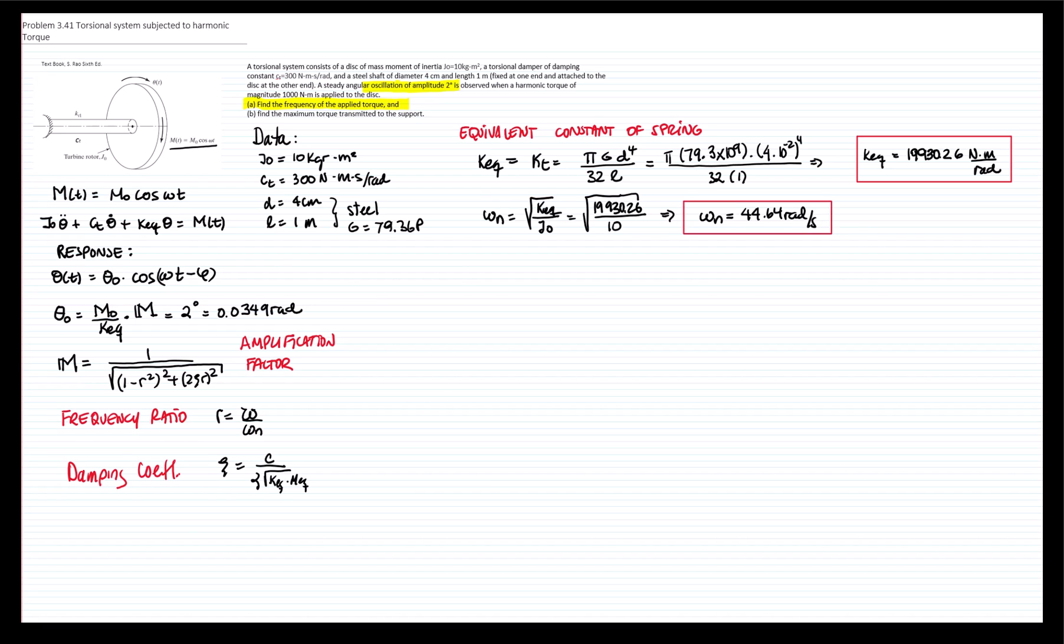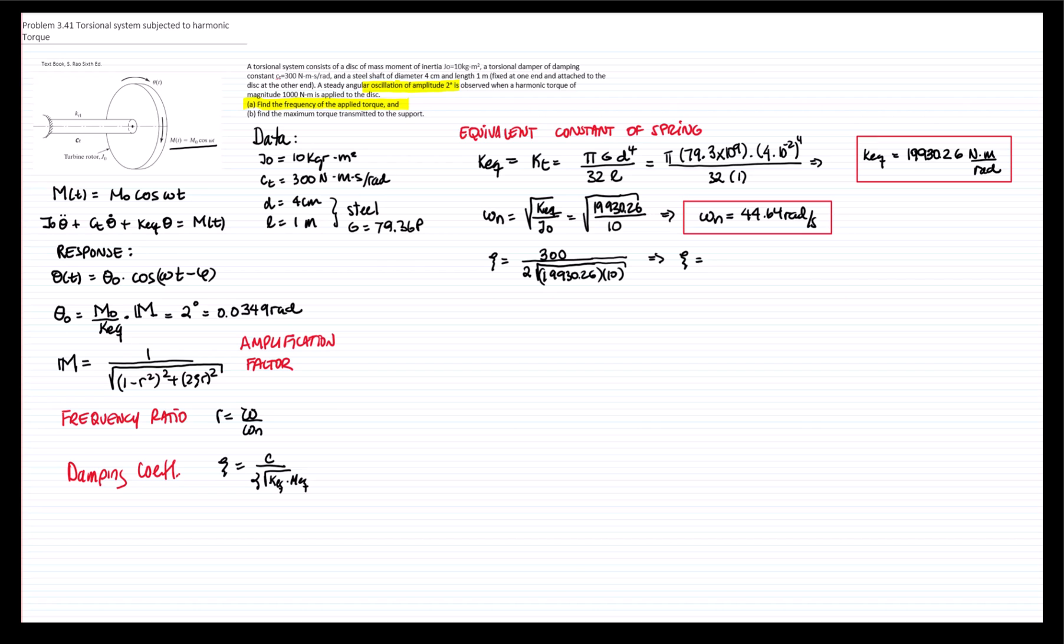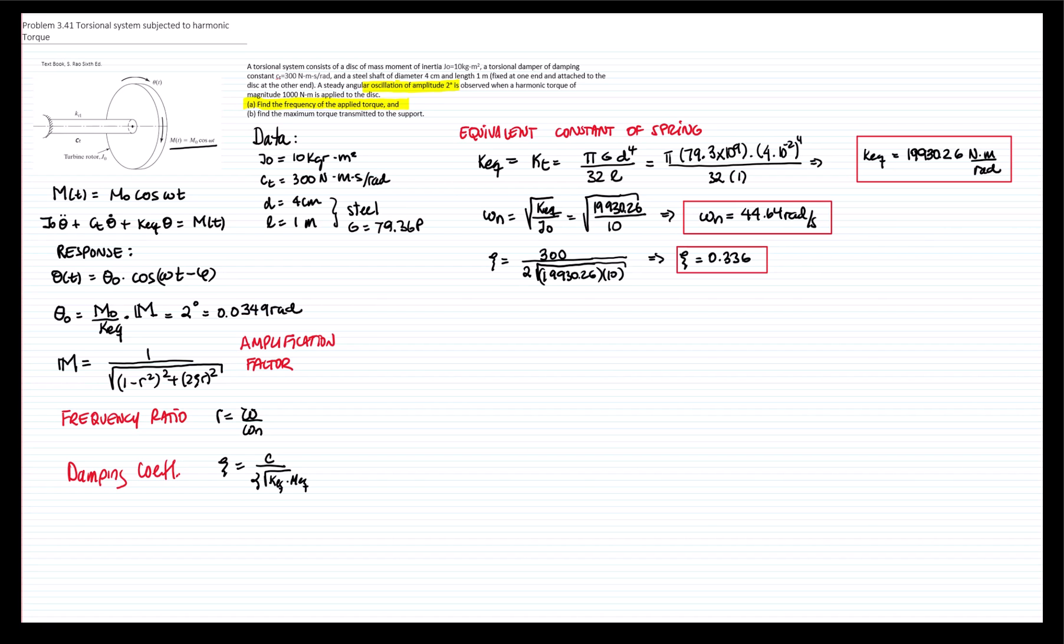And the last parameter that we need to calculate is the damping coefficient, which gives me zeta equals to 0.336. Now we know that the static deflection due to the moment applied is equals to 1000, which this number is given, divided by the constant of the spring we just found. And this is equals to 0.0502 radians.